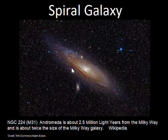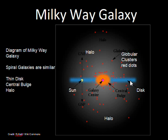Spirals have noticeable dust in the arms of the spiral galaxy. Here is a diagram of the Milky Way galaxy, which we can apply in general to spiral type galaxies.